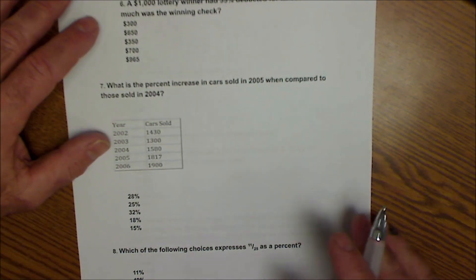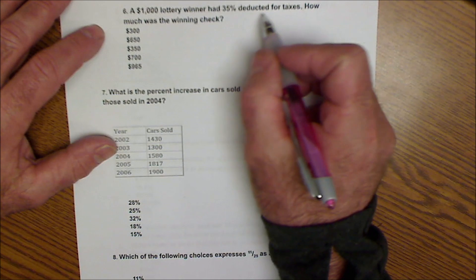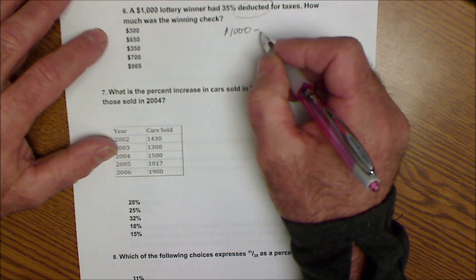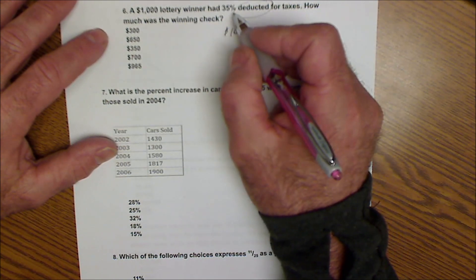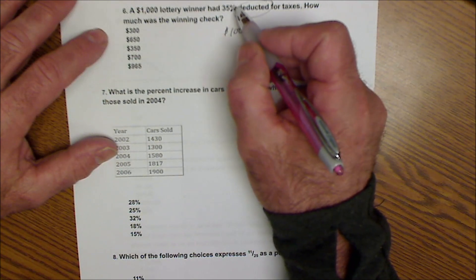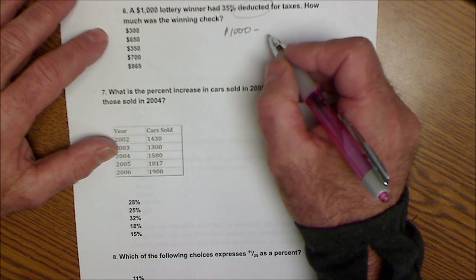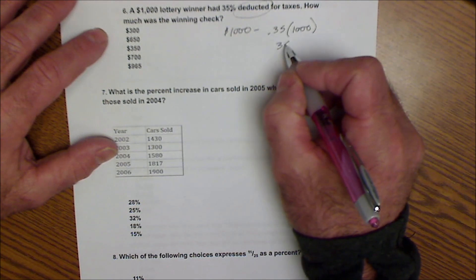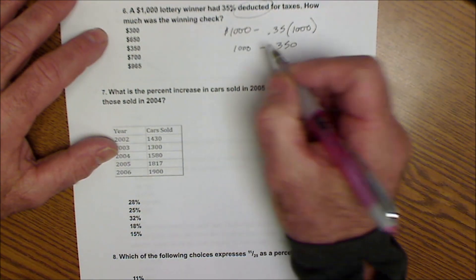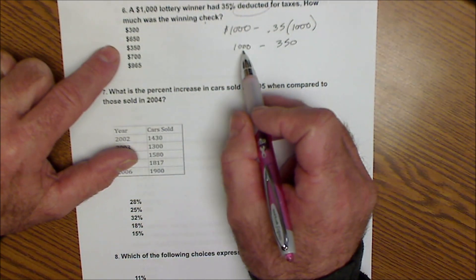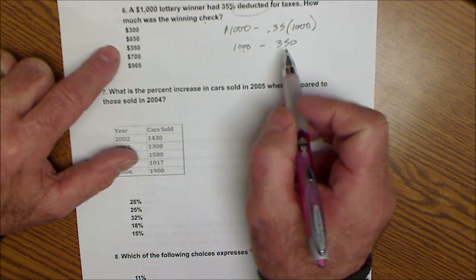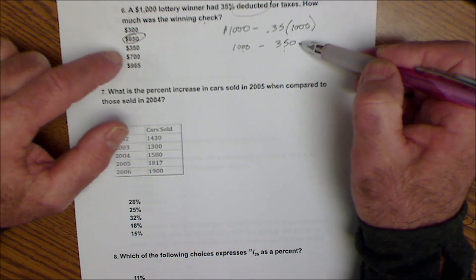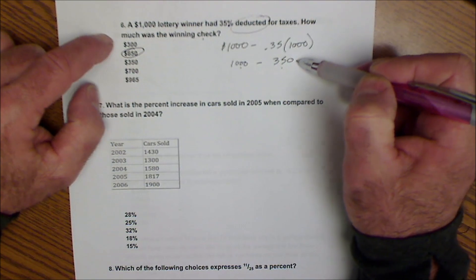All right. Turning the page to number 6. $1,000 lottery winner had 35% deducted for taxes. So I have $1,000 minus the 35%. So I'm going to convert that to a decimal. I remember this conversion by this little arrow saying go over two places. So it's .35 times 1,000 is how much I'm paying in taxes. That's $350. How much was the winning check? Well, the winning check was $1,000 minus this $350 or $650. So again, the natural distractor is $350 because that's what you pay in taxes. But it's asking how much you actually get.